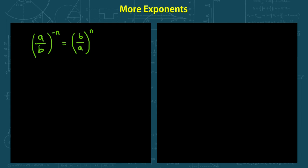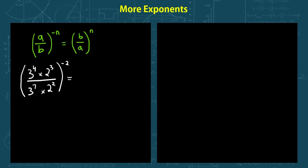Let's show an example. What if I had 3 to the power of 4 times 2 to the power of 3, over 3 to the power of 7 times 2 to the power of 2, and the whole thing is to the power of negative 2? It can be complicated to work with a negative power, so the best thing to do is flip the fraction to make it positive. When we flip it, 3 to the power of 7 and 2 to the power of 2 come up on top, and it becomes a positive 2.